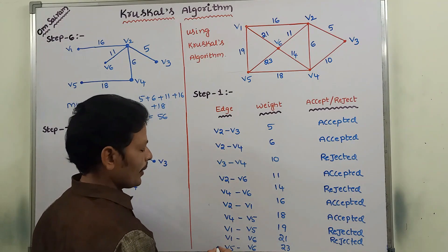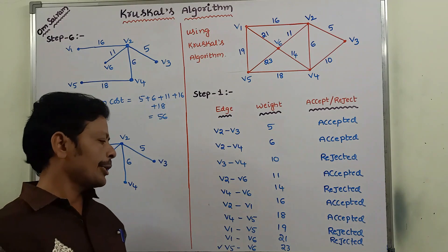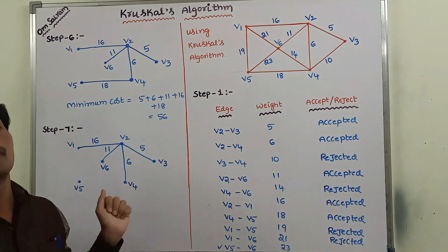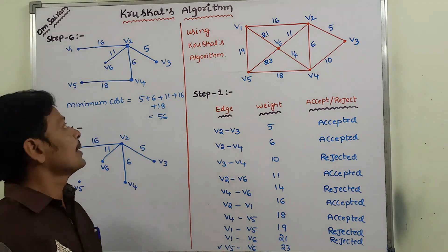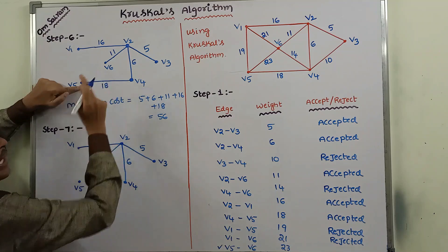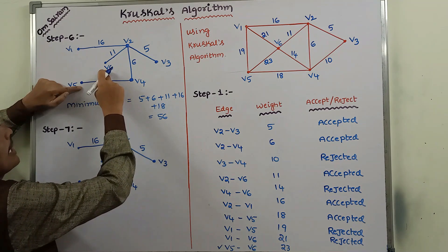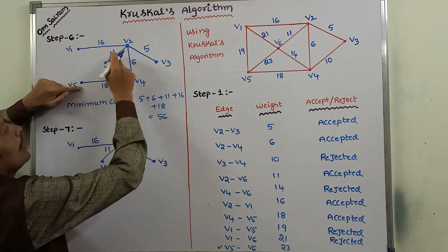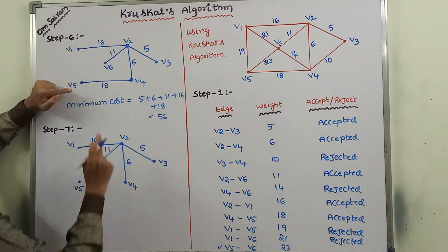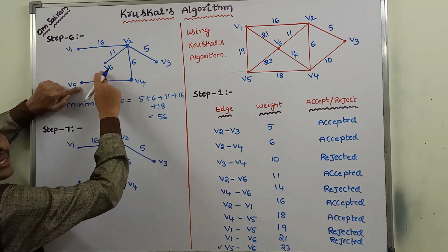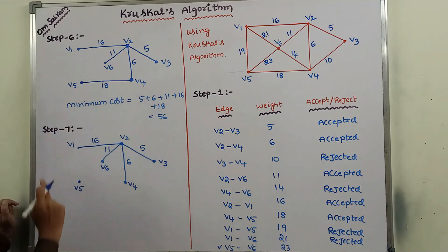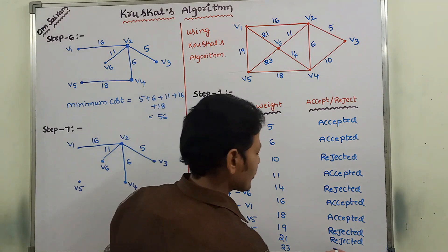Next, the minimum weight edge is V5 to V6, weight 23. After adding this edge V5 to V6, it can form a cycle: V5 to V6, V6 to V2, V2 to V4, V4 to V5. So this edge is also rejected.